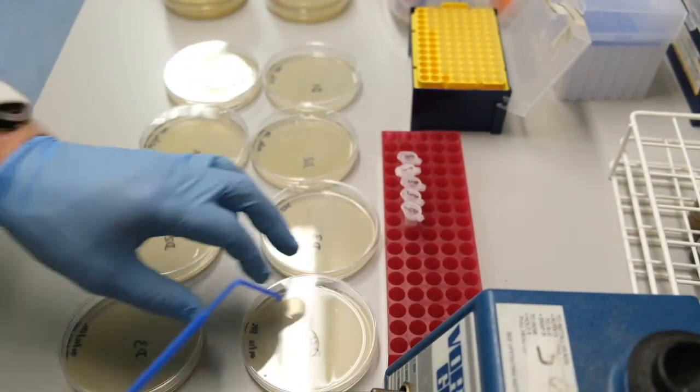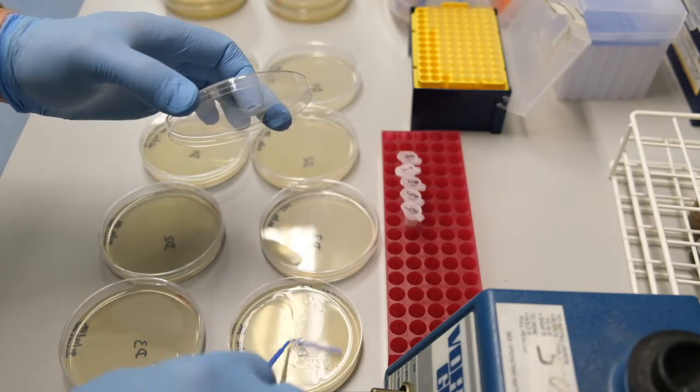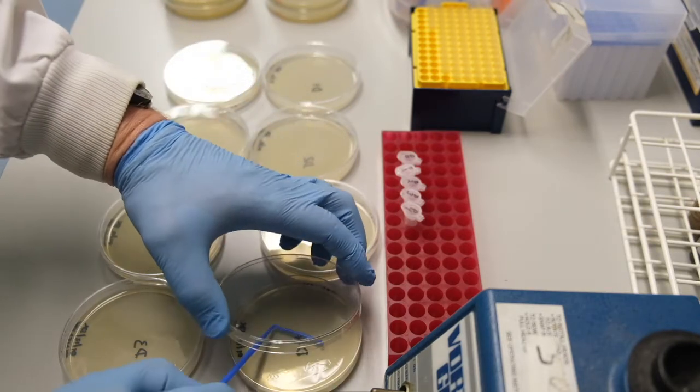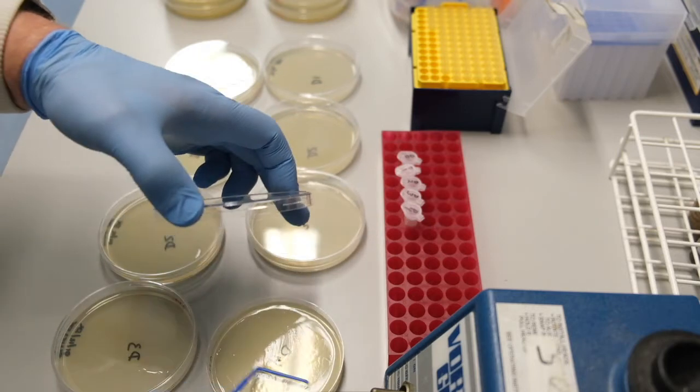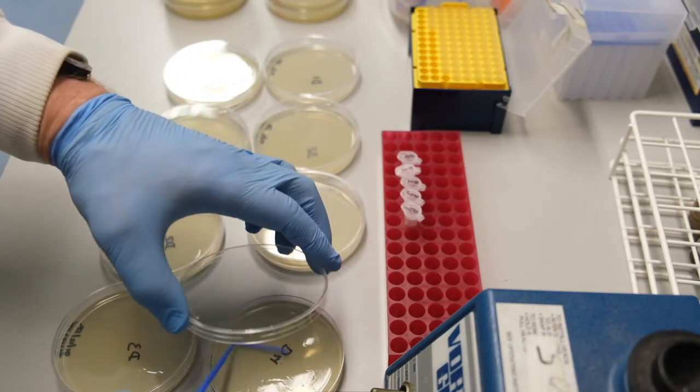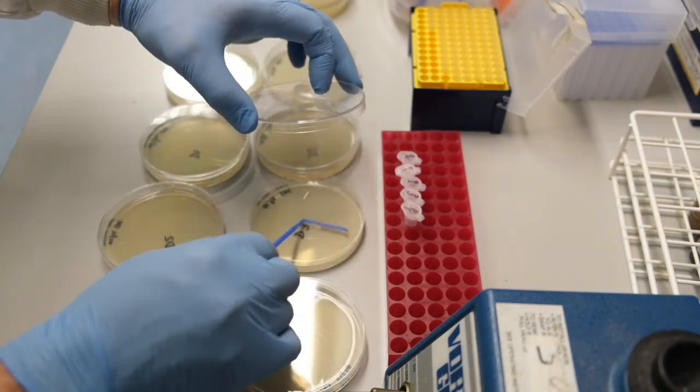We are now ready to spread the bacteria on our plate. We are going to use a sterile disposable spreader. Spread the cells, then turn the plate and spread them some more. Your aim is to spread the cells evenly across the entire plate.